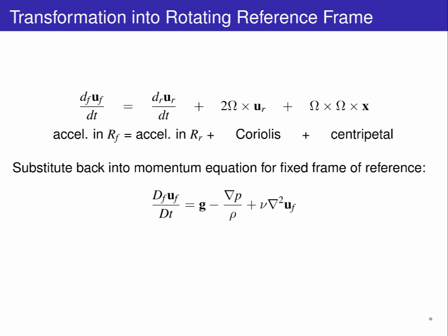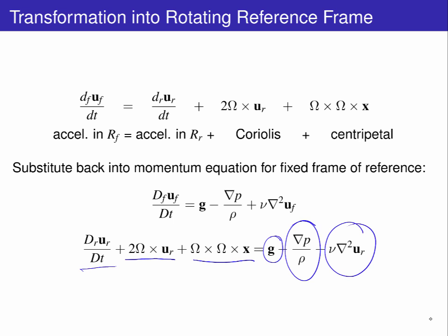At this stage, we substitute this transform back into the Navier-Stokes momentum equation for a fixed frame, giving the total time derivative in the rotating frame plus the Coriolis and centripetal terms as equal to the gravity, pressure gradients, and viscosity terms.